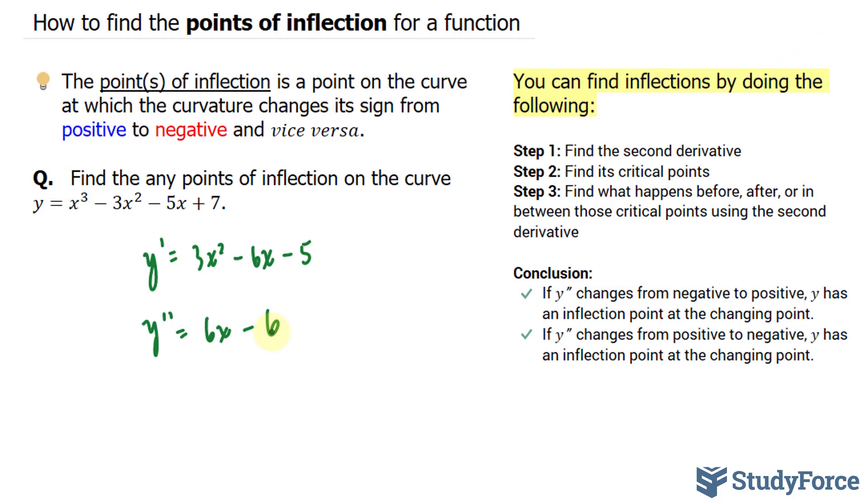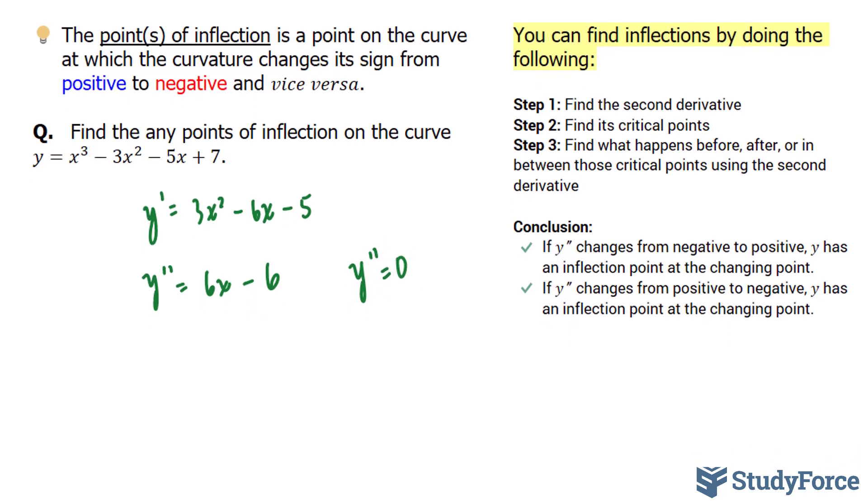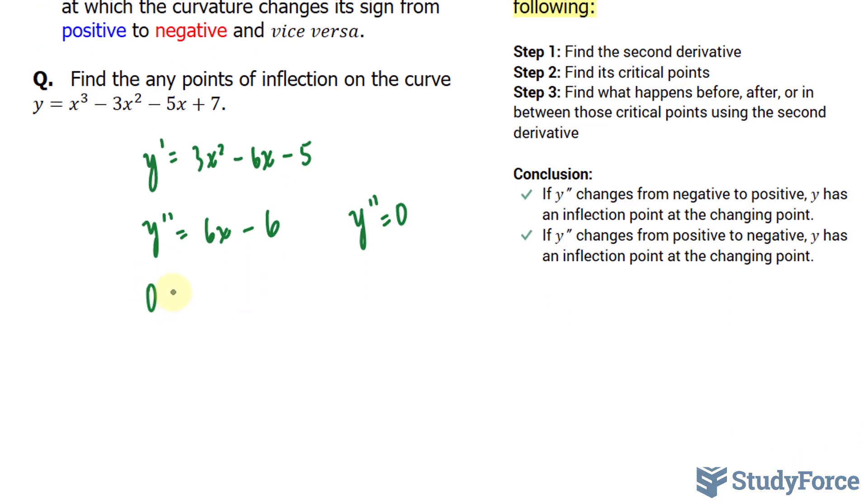Step two, they ask us to find its critical points. And to do that, we'll set y double prime equal to 0. So setting this equal to 0 and then solving for x, we end up with bringing that 6 over, x is equal to 1. Dividing both sides by 6, of course, gives us that conclusion.